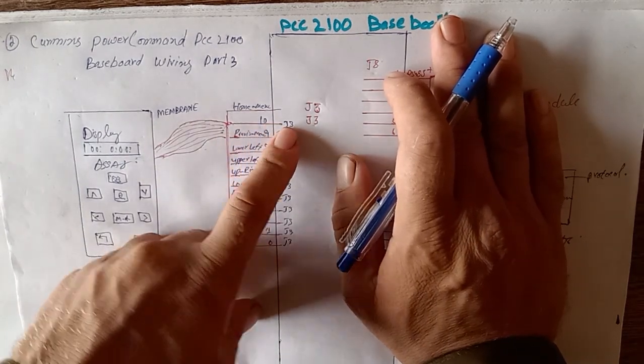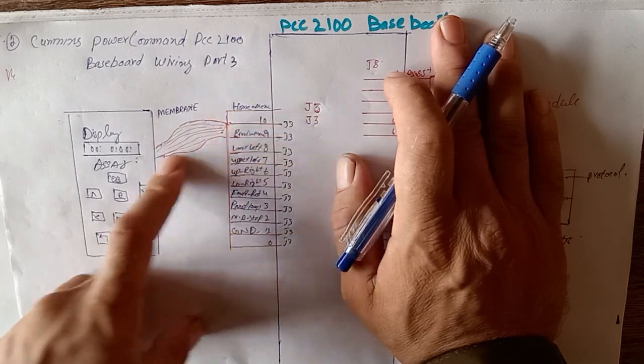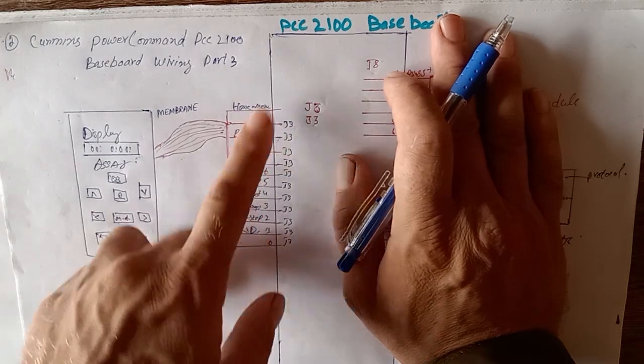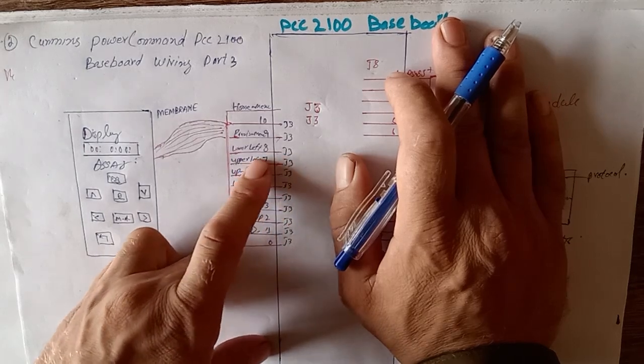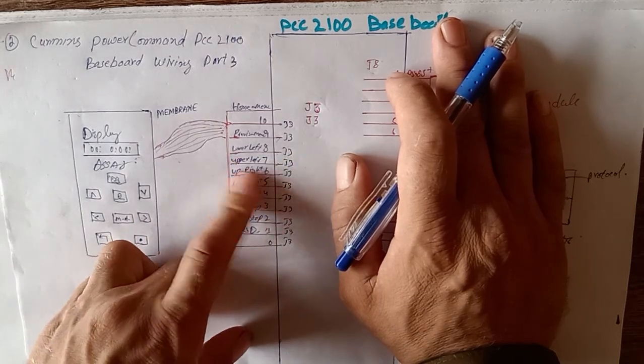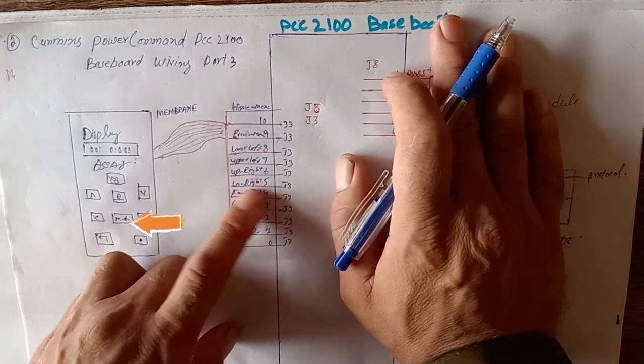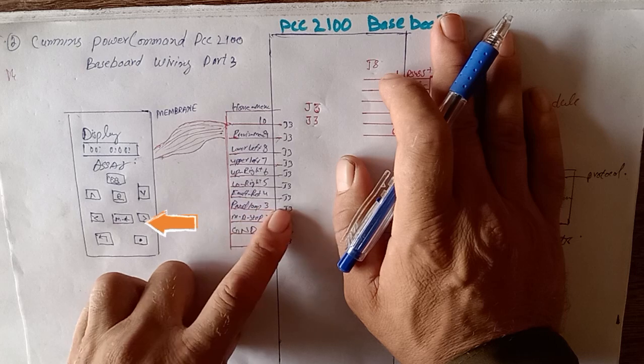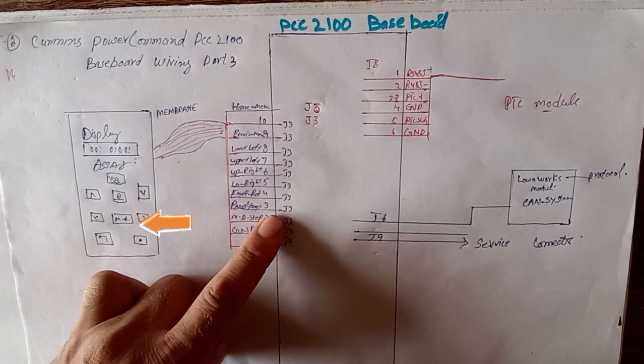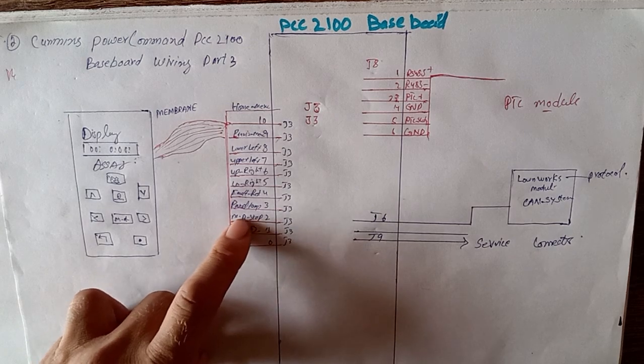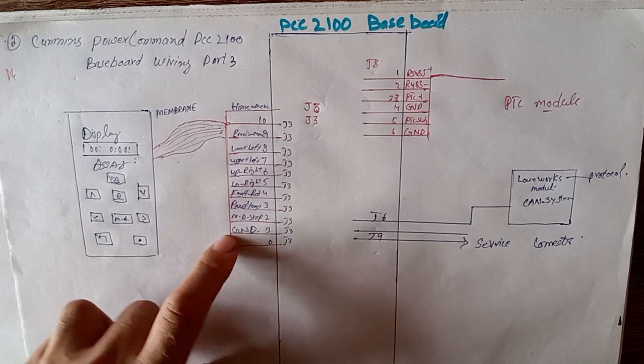J3 pin number 10 is home menu positive. J3 pin 9 is previous menu positive. J3 pin 8 is lower lift. J3 pin 7 is upper lift. J3 pin 6 is upper right. J3 pin 5 is lower right. J3 pin 4 is fault reset. J3 pin 3 is panel lamp test. J3 pin 2 is manual run stop. J3 pin 1 is ground. This is the display section.